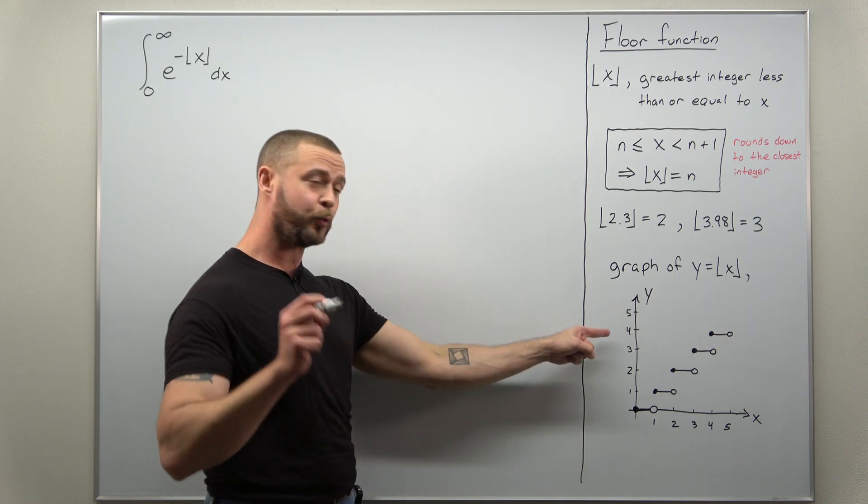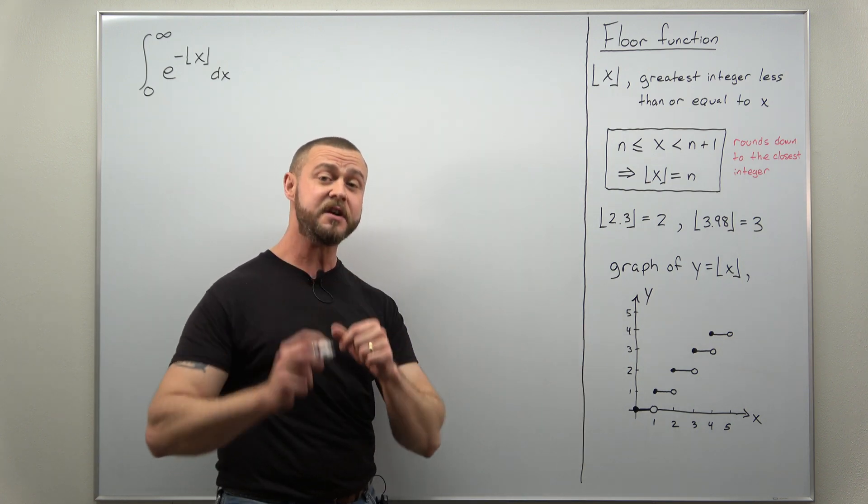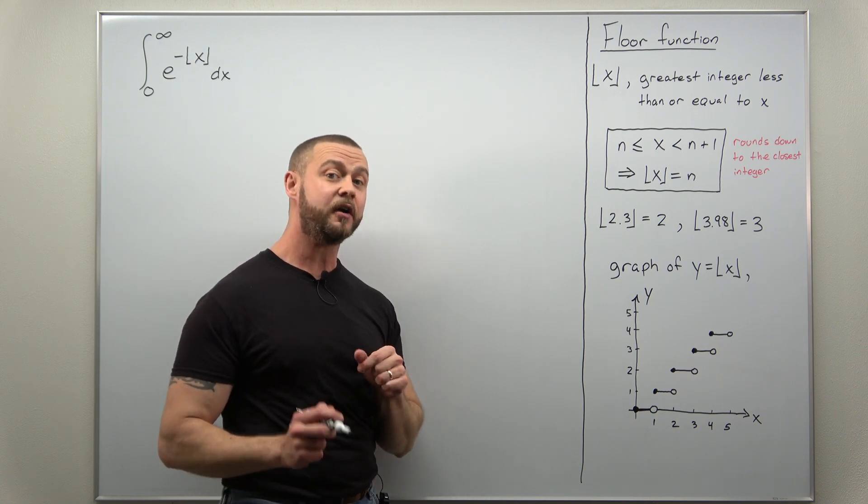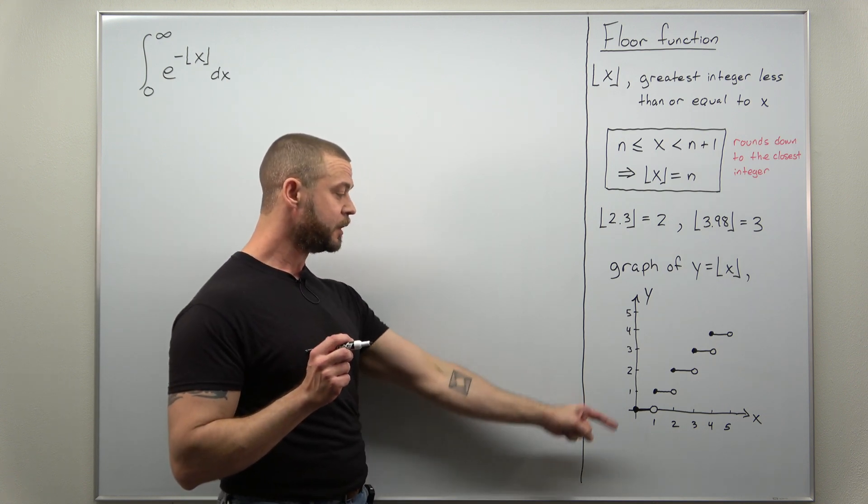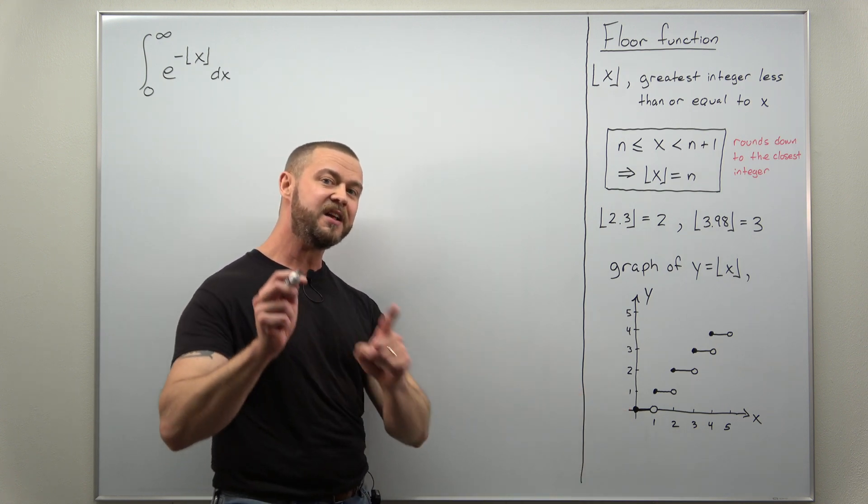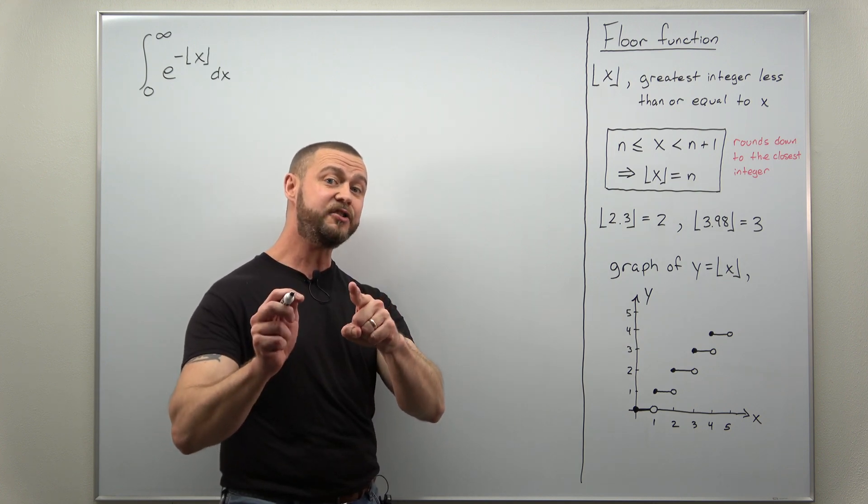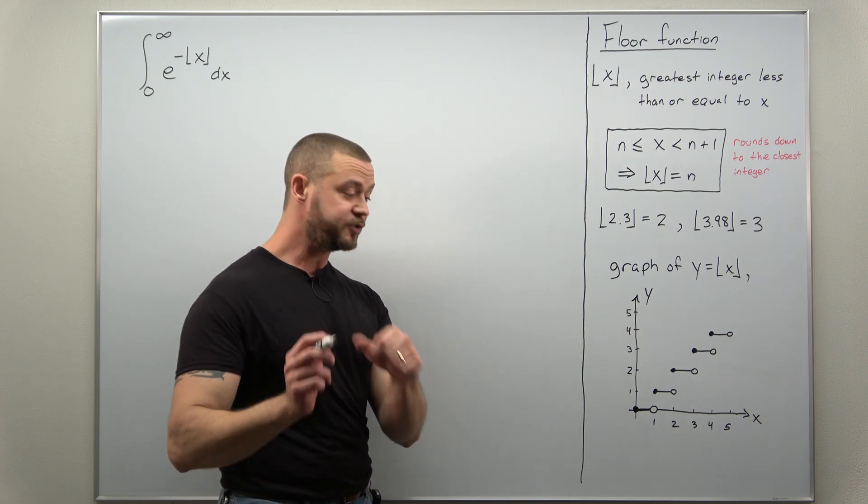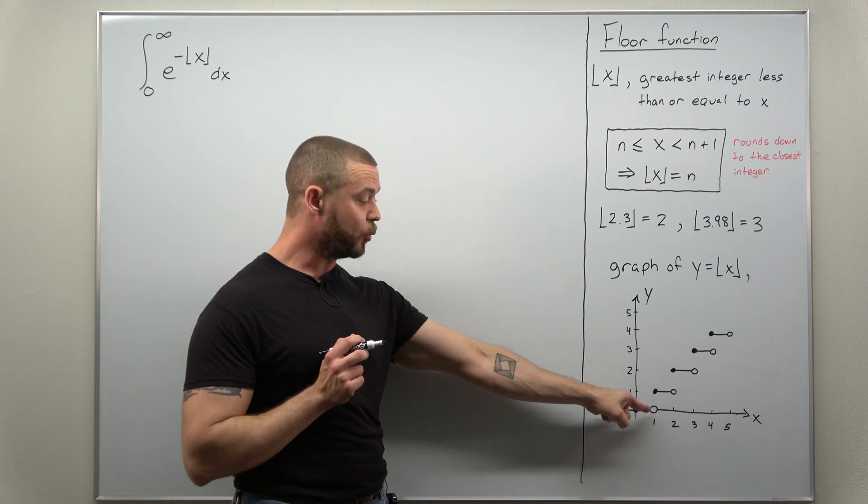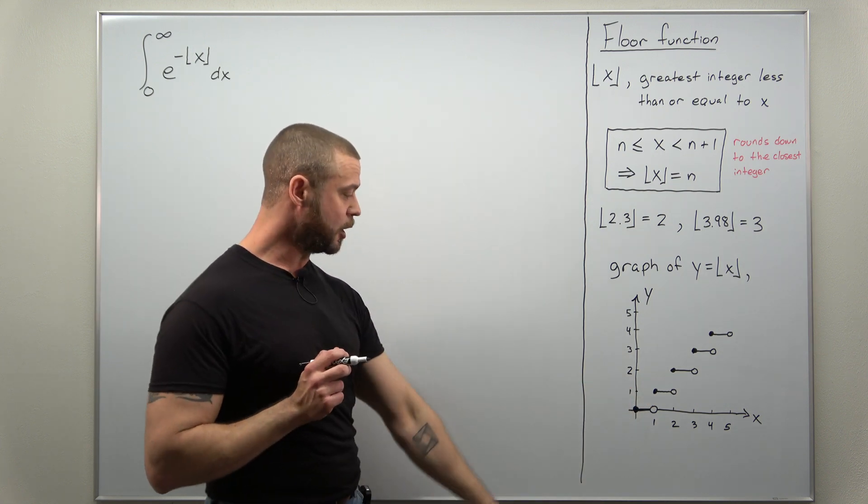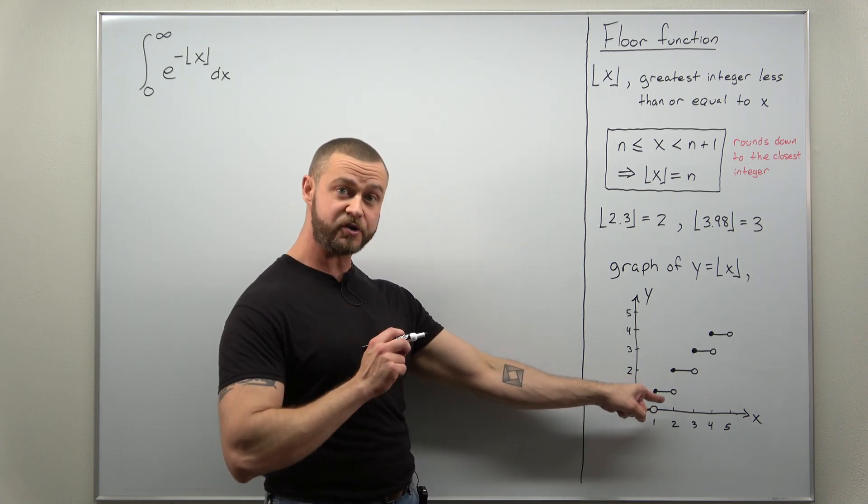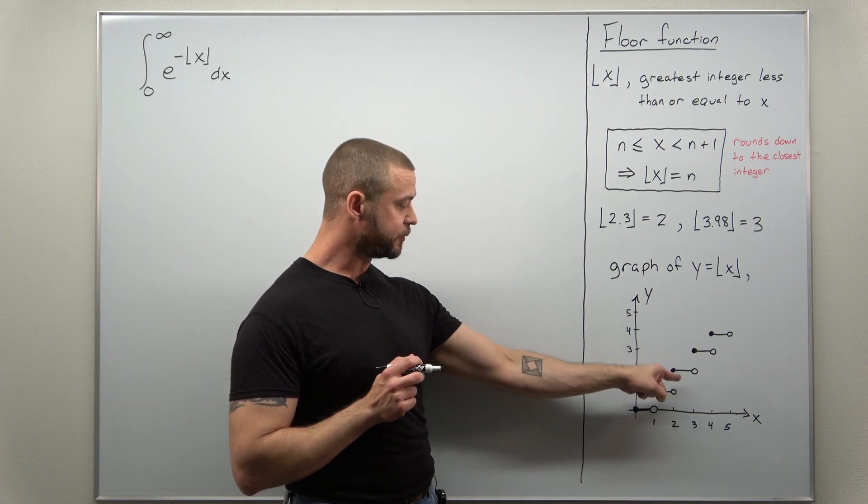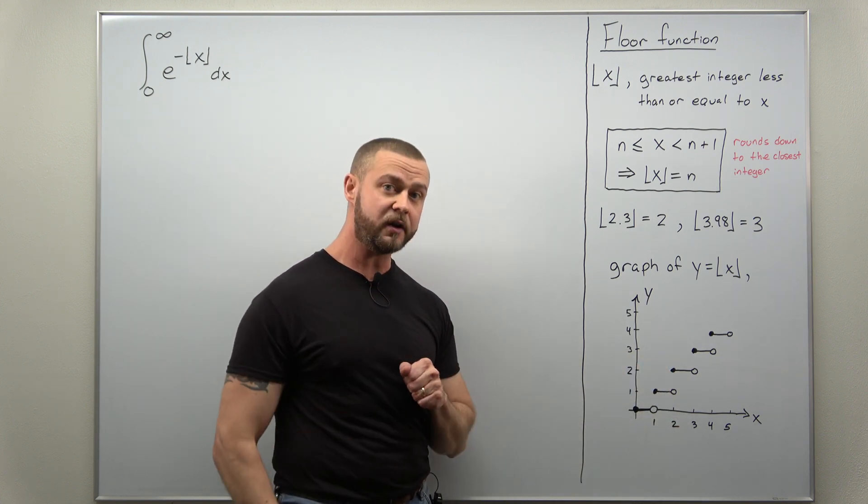Now the graph of the floor function is interesting and that's going to give us a clue how to start evaluating our integral here. Notice the floor function is constant on integer intervals. So from the interval 0 to 1 the floor function is 0, 1 to 2 the floor function is 1, 2 to 3 the floor function is 2, and then so on and so on.